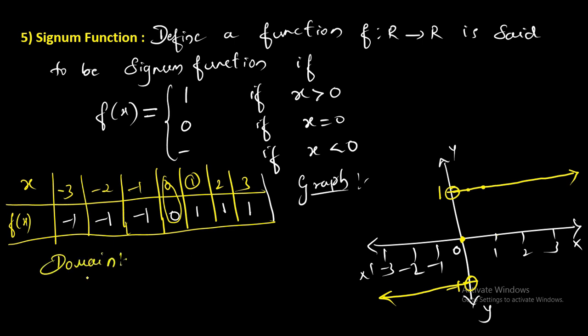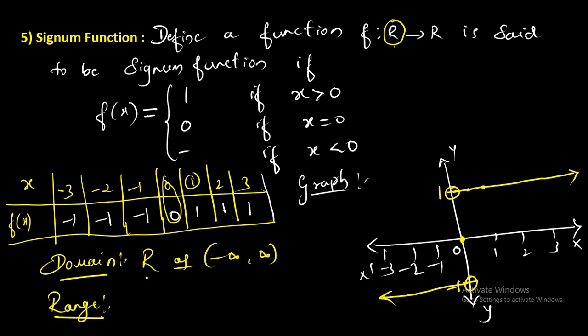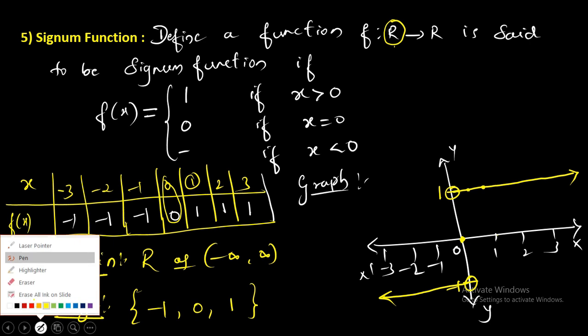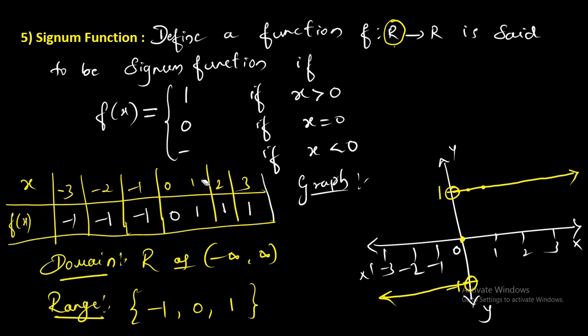The domain of the signum function is capital R or minus infinity to infinity. For the range, the values obtained are only three numbers: minus 1, 0, and plus 1. Not any other numbers. Therefore the range is the set consisting of minus 1, 0, and 1.